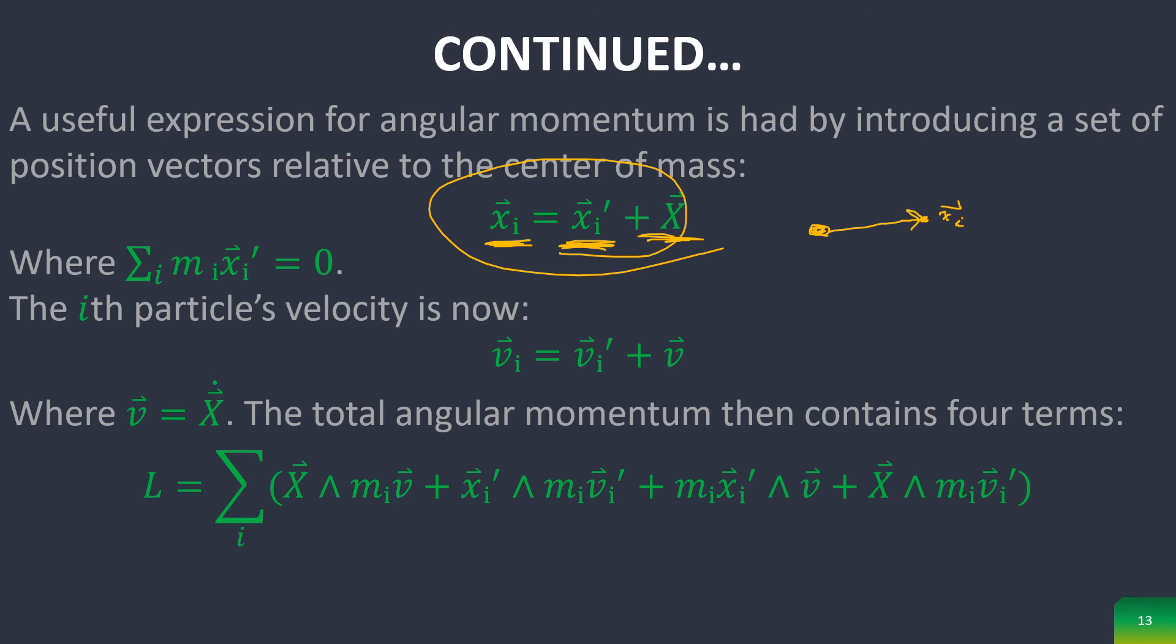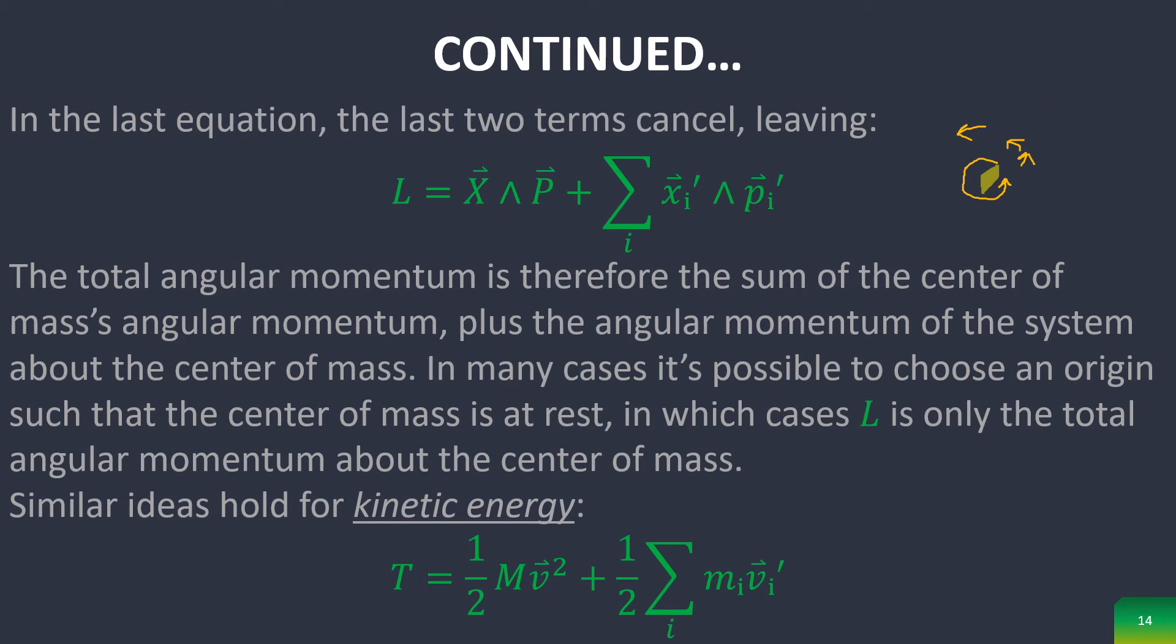This leads us to the Ith particle's velocity being this, which then comes up with this completely annoying angular momentum term below. Luckily however, this cancels out, and we can just leave these two things, where this is the angular momentum of the center of mass about some origin, and then this is the angular momentum of all the particles about the center of mass. Normally we can choose an origin such that this term goes to zero, and we only will have to compute this.